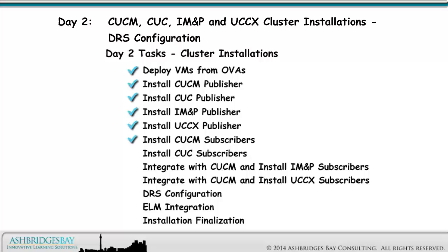Install our CUCM, CUC, IM&P, and UCCX subscribers. Activate the services we need in the CUCM cluster when we install the IM&P and UCCX subscribers. Integrate IM&P and UCCX with CUCM when we install the IM&P and UCCX subscribers. Configure DRS for all four applications. Integrate CUCM and CUC with ELM. And do some final tasks, like upgrade VMware tools and configure virtual machine startup and shutdown.